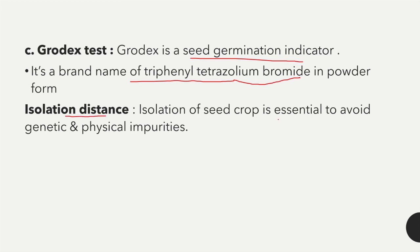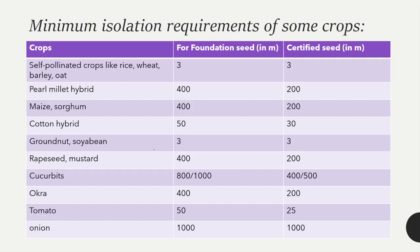The isolation of seed crop is essential to avoid genetic and physical impurity. For crop improvement methods, hum isolation distance maintain karte hain jisse ham crop ki physical and genetic impurity ko avoid kar sakte hain.